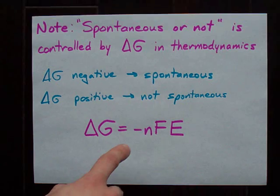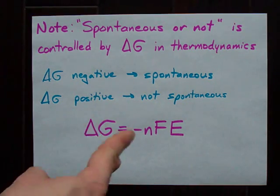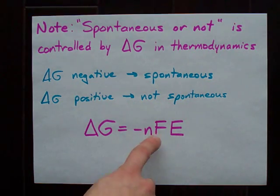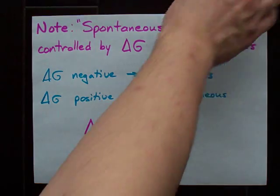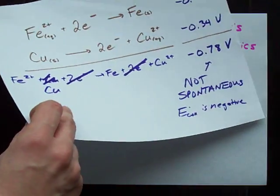Where n is the number of electrons swapped in the reaction, F is the Faraday constant, and E is the E cell that we had figured out before.